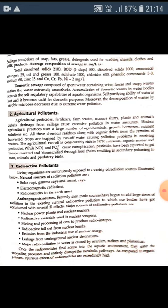Anthropogenic sources have begun to add large doses of radiation to existing natural radioactive pollution, to which our bodies have become accustomed with ill effects. Major sources of radioactive pollutants are nuclear power plants, nuclear reactors, radioactive materials used in nuclear weapons, mining and processing of ores to produce radioisotopes, radioactive fallout from nuclear bombs, emission from industrial use of nuclear energy, and leakage from underground nuclear detonations. Major radiopollution in water is caused by uranium, radium and plutonium.